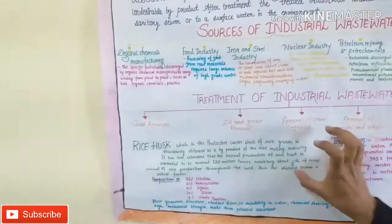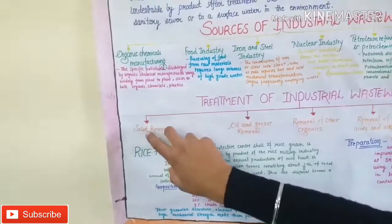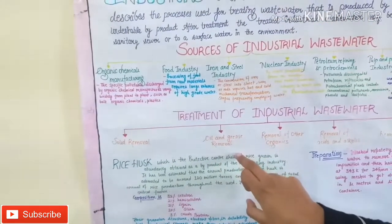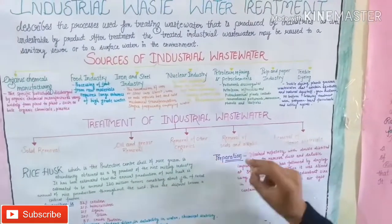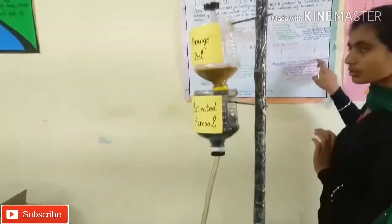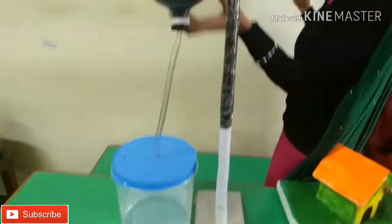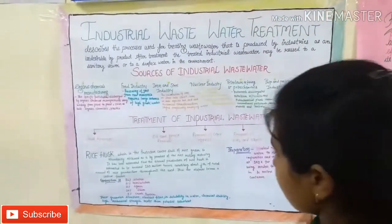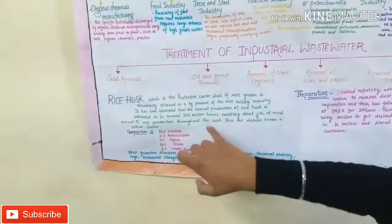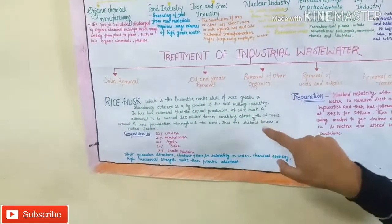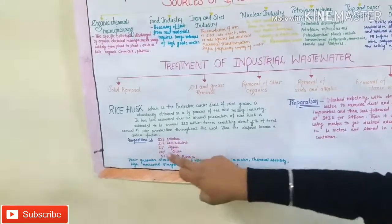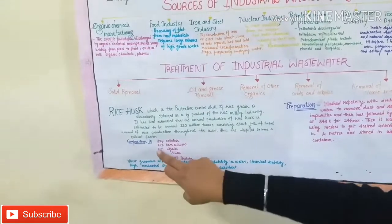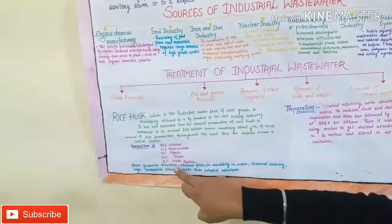We have tried to remove contaminants using rice husks, oil and grease, and orange husks. The rice husk has a composition of 120 million tons — one-fifth of total annual rice produced in India. This composition is 32% cellulose, 21% hemicellulose, 21% lignin, 20% silica, and 3% pure protein.